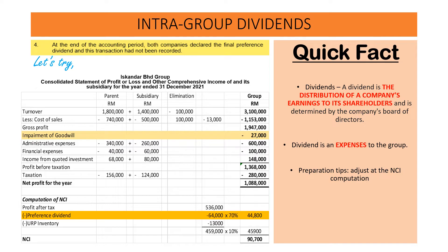For intra-group dividend, a dividend is the distribution of a company's earnings to its shareholders and is determined by the company's board of directors. Dividend is an expense to the group.